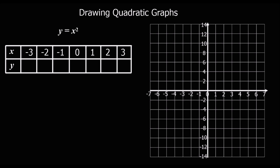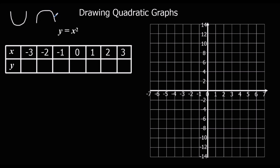In this video we're going to look at drawing quadratic graphs. Quadratic graphs are graphs with the highest power of squared, so the highest power is 2 — these are x squared graphs. They form the shape of a smiley face or a sad face. A positive x squared graph forms this U-shaped parabola, and a negative x squared graph forms this sad face, N-shaped parabola.